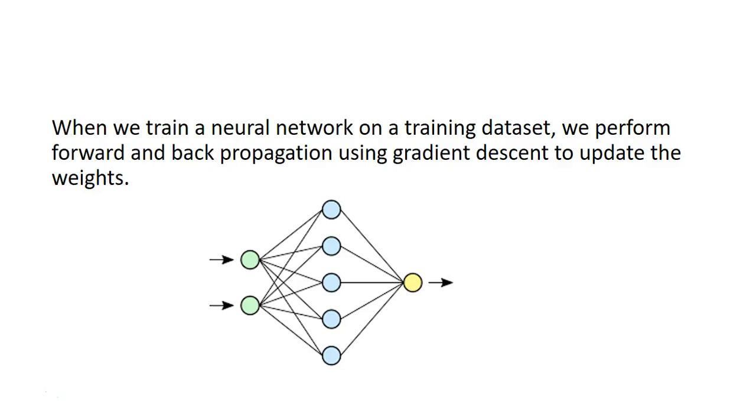When we're training a neural network on a training dataset, we perform forward and back propagation using gradient descent to update the weights. We continually update the weights until our model is trained.